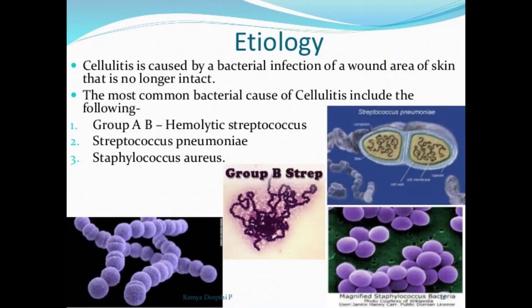Cellulitis occurs when bacteria — most commonly streptococcus and staphylococcus — enter through a crack or break in your skin. The incidence of a more serious staphylococcal infection called methicillin-resistant staphylococcus aureus, that is MRSA, is increasing. Although cellulitis can occur anywhere on your body, the most common location is the lower leg. Bacteria are most likely to enter disrupted areas of the skin such as where you have had recent surgery, cuts, puncture wounds, ulcers, athlete's foot, or dermatitis.